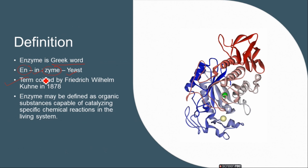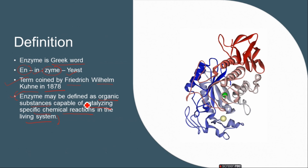The term enzyme was described by Frederick Wilhelm Kühne in 1878. Enzymes are organic substances which have catalytic activity for chemical reactions in the living system. The enzyme may be defined as organic substances capable of catalysing specific chemical reactions in the living system.